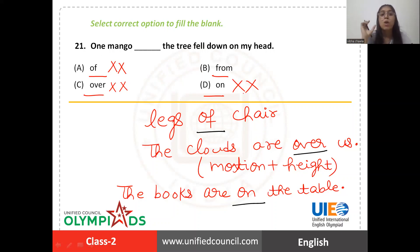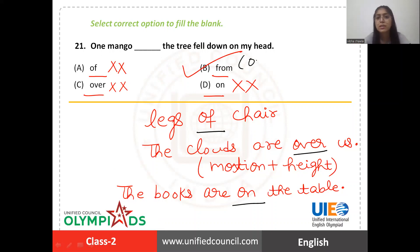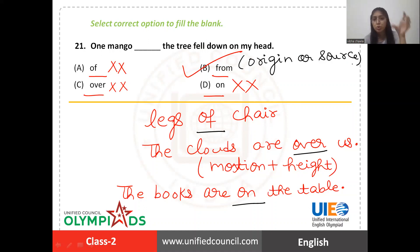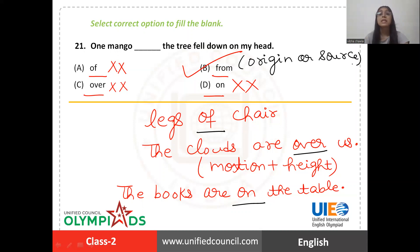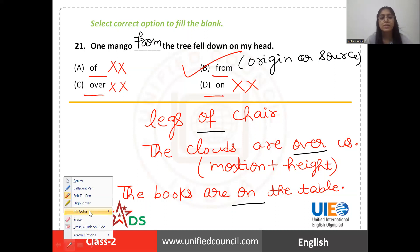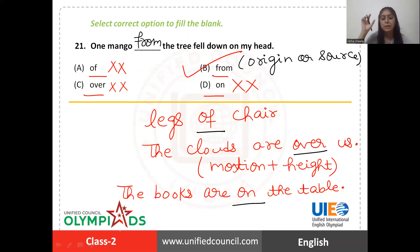One mango — we are trying to save one mango from the tree. From is used to indicate the origin or source. Here it is showing the original source of the mango that fell: one mango from the tree fell down on my head. That's why the right answer is option B — from.